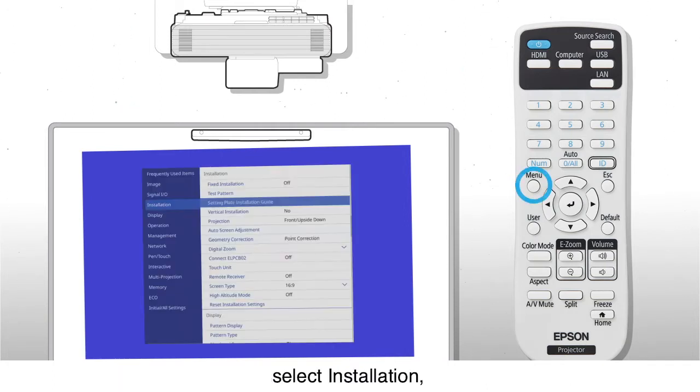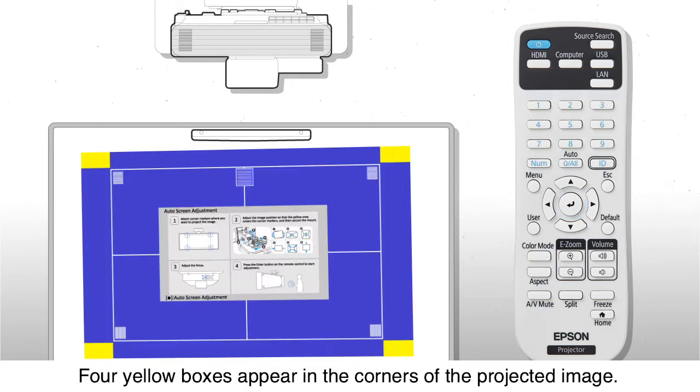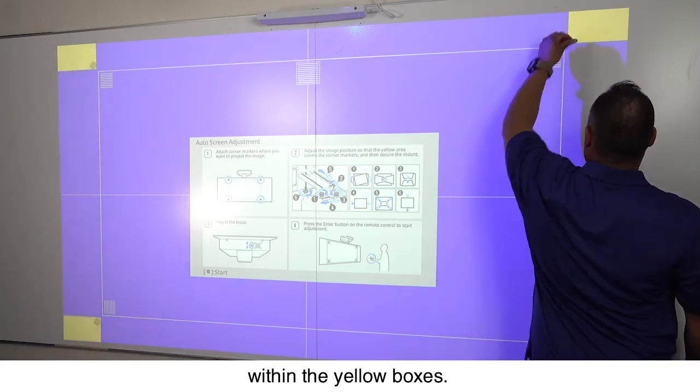Press menu, select installation, then select auto screen adjustment. Four yellow boxes appear in the corners of the projected image. Place the four included auto image adjustment markers within the yellow boxes.